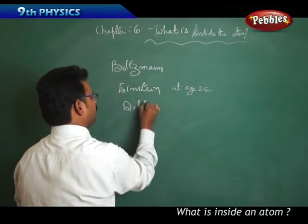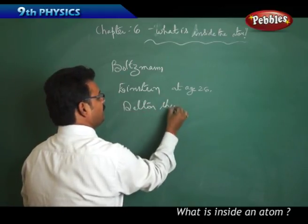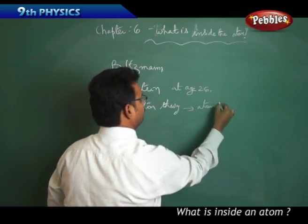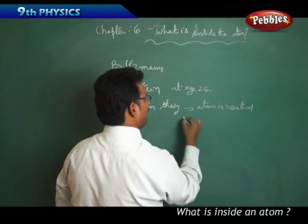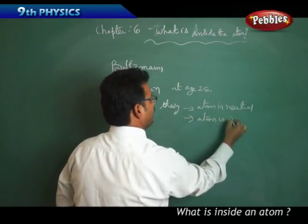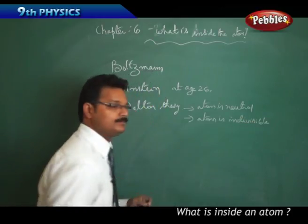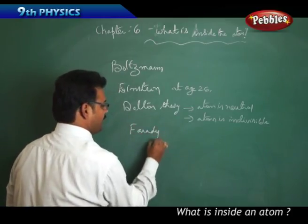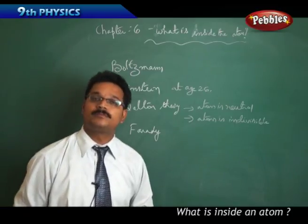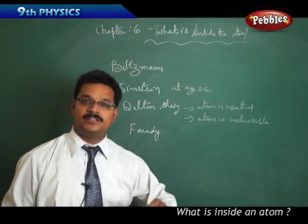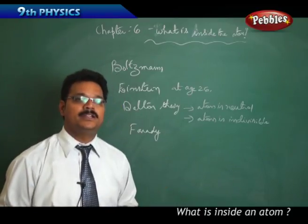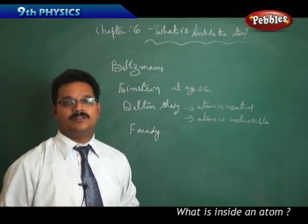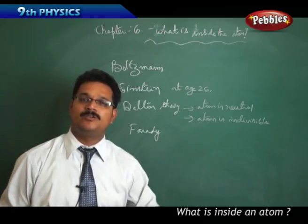Now looking at another dimension of history — there was a scientist called Dalton. In his theory, Dalton proposed that atom is neutral and atom is indivisible. But later, another great physicist called Michael Faraday did a reaction called electrolysis. In that reaction, he found that there is a negative charge flow, and that negative charge is accumulated on the atom.